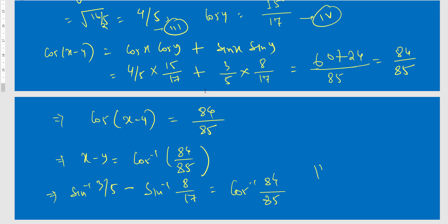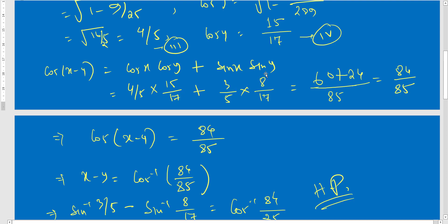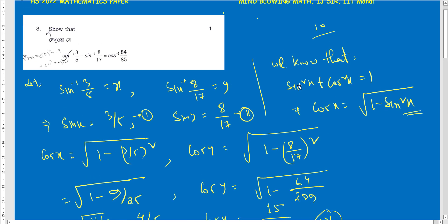This is your required solution. The question is not that tough — it uses the Class 11 cos(x − y) formula, which is very basic. You can easily score 4 marks. Note it down and solve similar questions of this type.